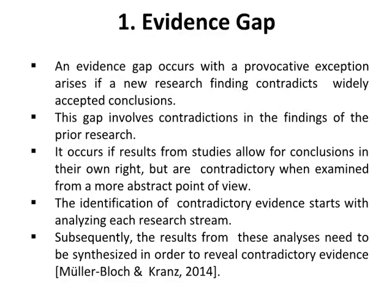Number one is evidence gap. An evidence gap occurs when a provocative exception arises if a new research finding contradicts widely accepted conclusions. This gap involves contradictions in the findings of prior research. It occurs if results from studies allow for conclusions in their own right, but are contradictory when examined from a more abstract point of view. The identification of contradictory evidence starts with analyzing each research stream, and then the results need to be synthesized to reveal contradictory evidence.